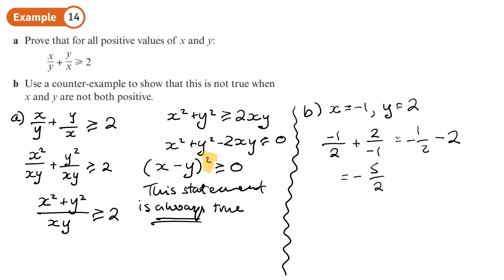So that is negative a half minus two, and that is negative five over two. And that statement is not greater than two, is it? It's less than two. So I suppose I should write something like this: This statement is not true. It's not greater than two. Actually, negative five over two is less than two. So there's my counterexample to prove this statement's not true.